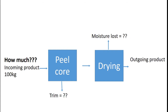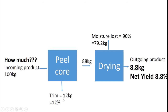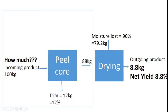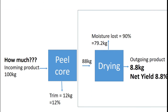If we're working through the numbers: trim was 12%, so with 100 kilos going in and 12% trim loss, we've got 12 kilos lost and 88 kilos of product going into the next unit operation. With 88 kilos going into the drying step and 90% moisture loss on that operation, 90% of 88 kilos is 79.2 kilos of moisture lost. Our net yield is 8.8 kilos. With multi-step processes, each unit operation's percent yield loss is additive towards that net sum.